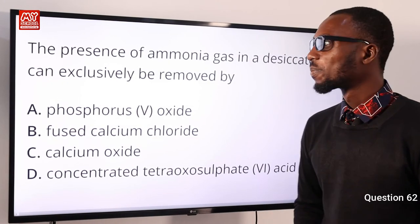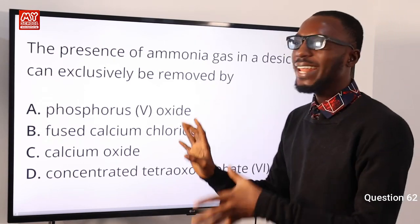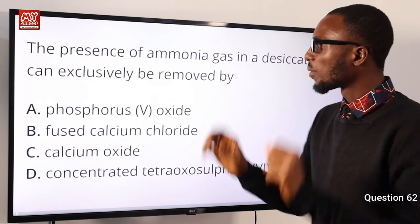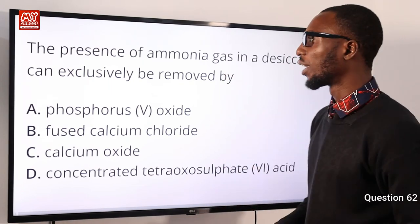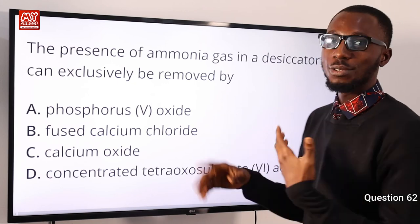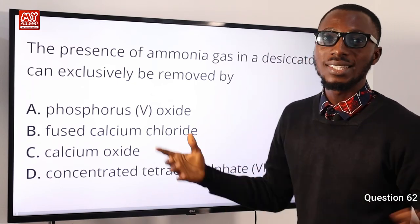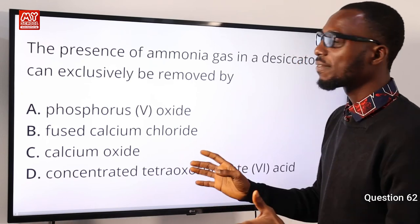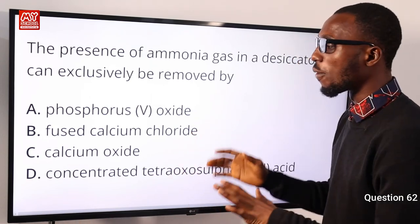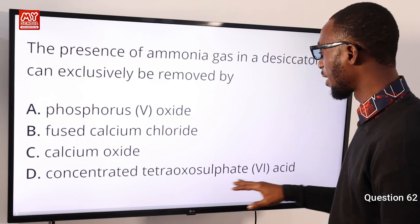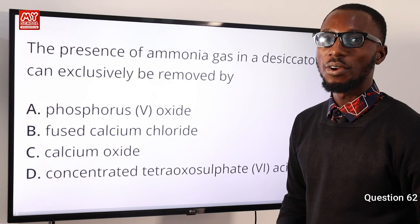Question 62: The presence of ammonia gas in a desiccator can exclusively be removed by concentrated H₂SO₄ (concentrated sulfuric acid). A desiccator is used to remove traces of water from an almost dry sample. Option D is correct.